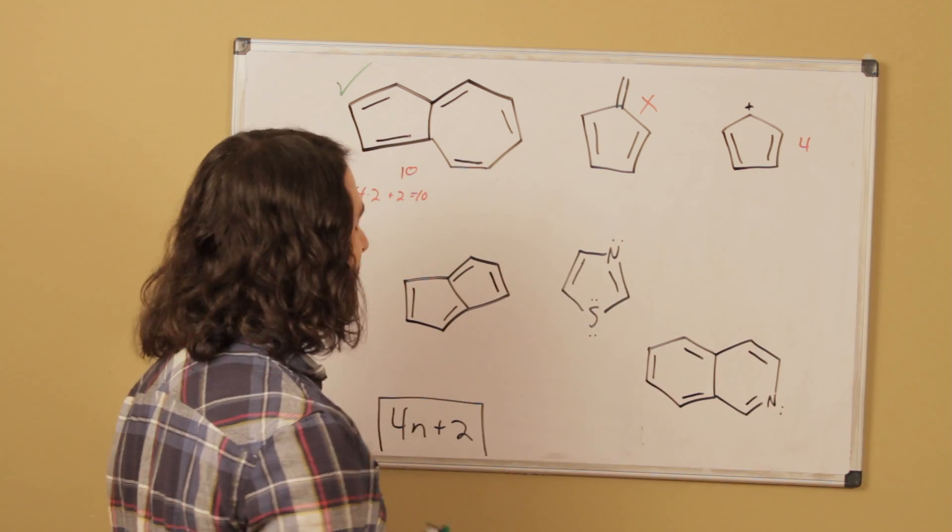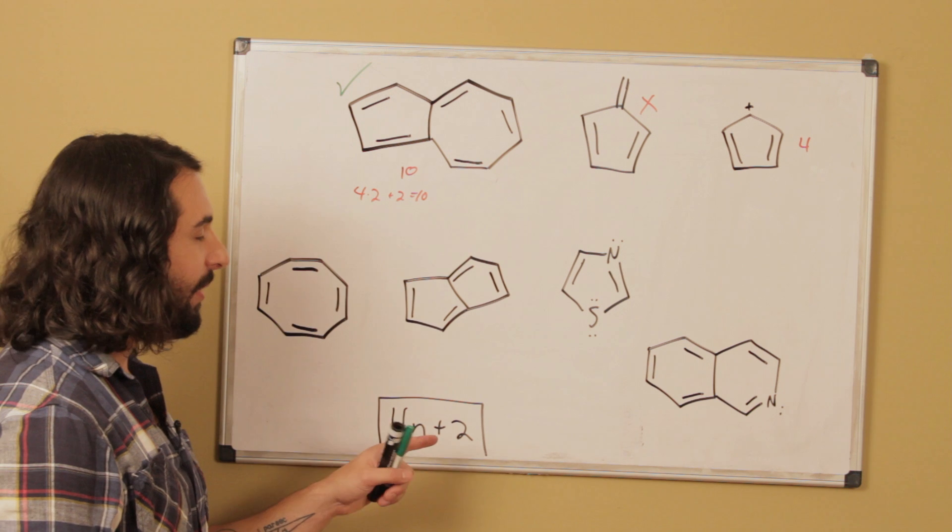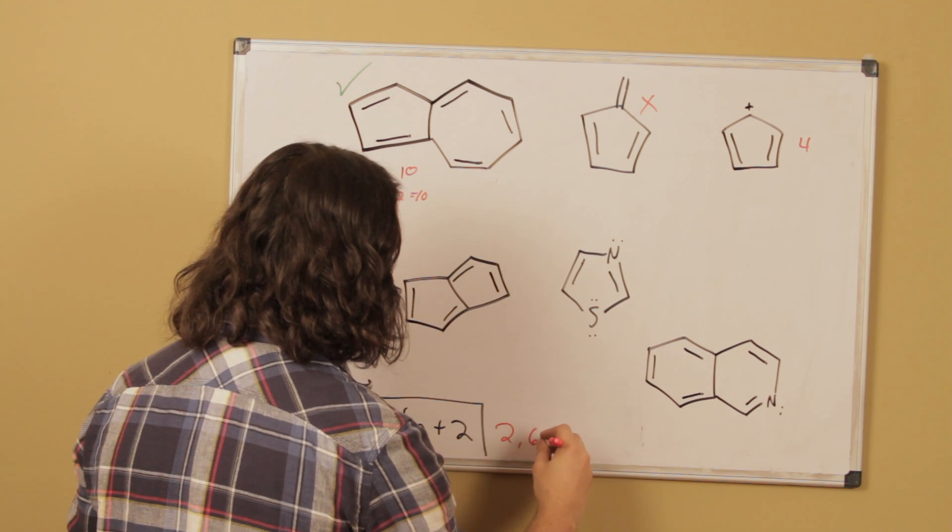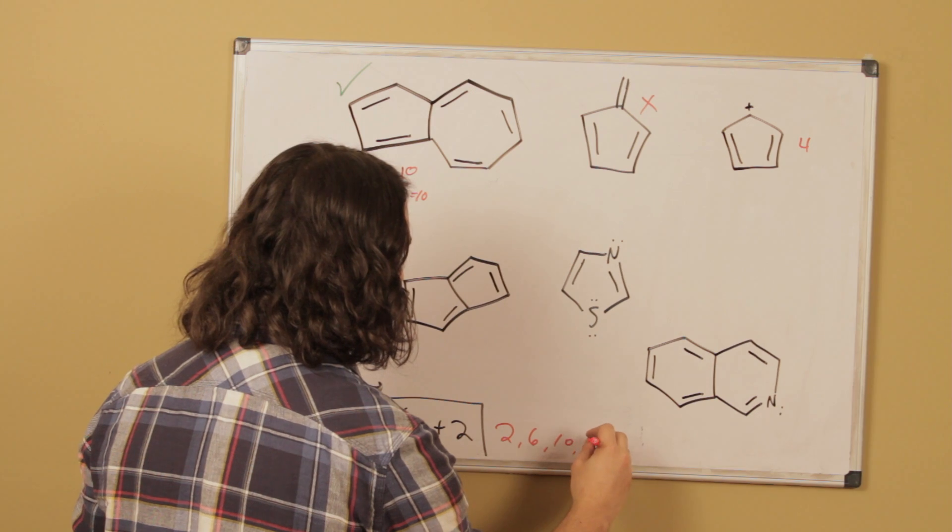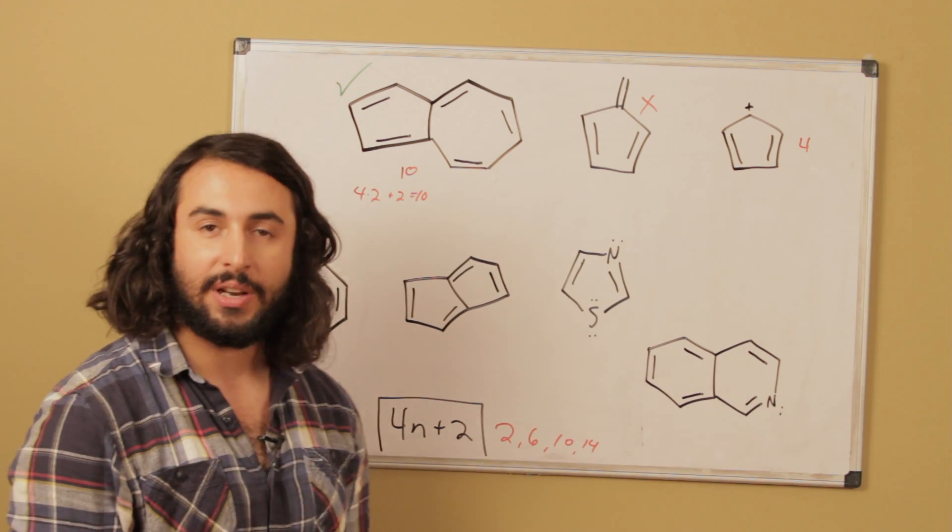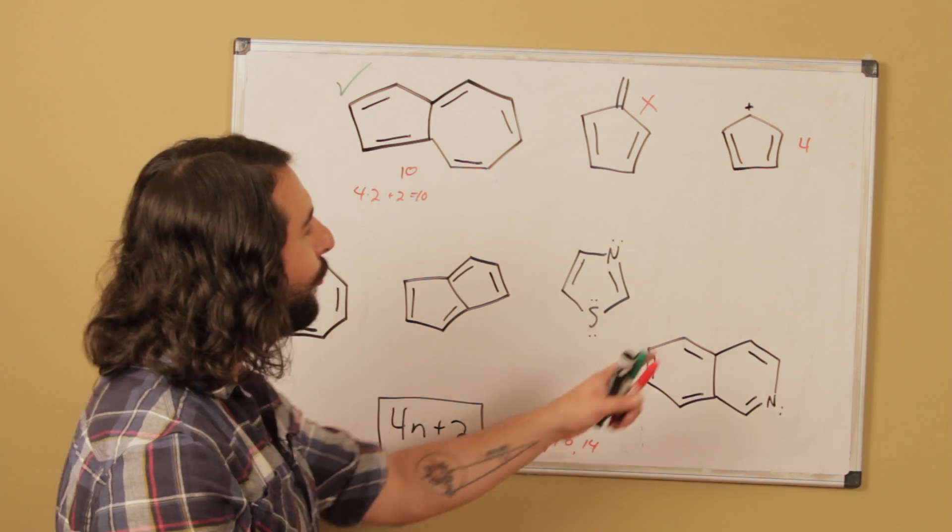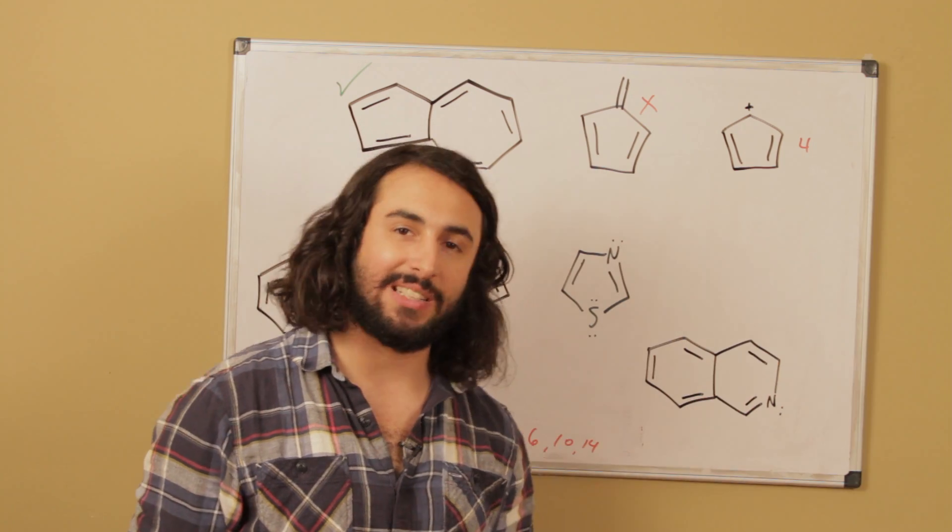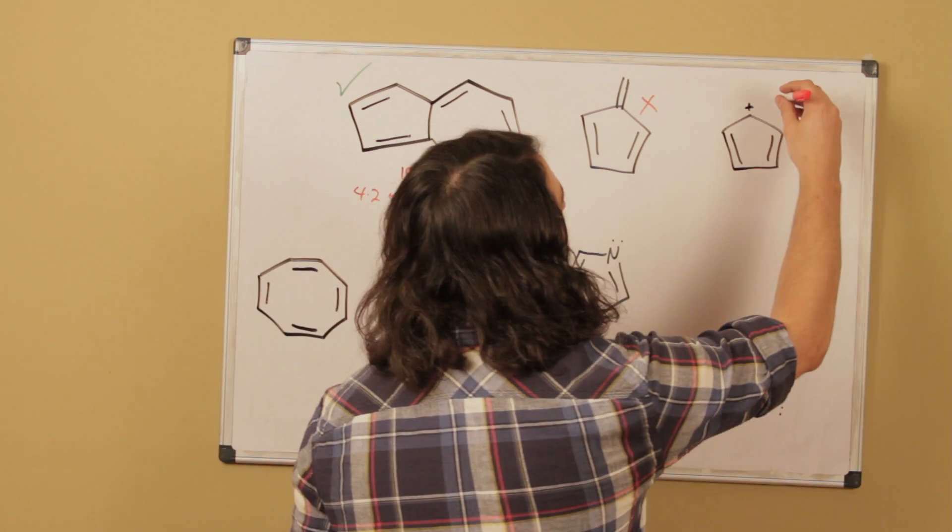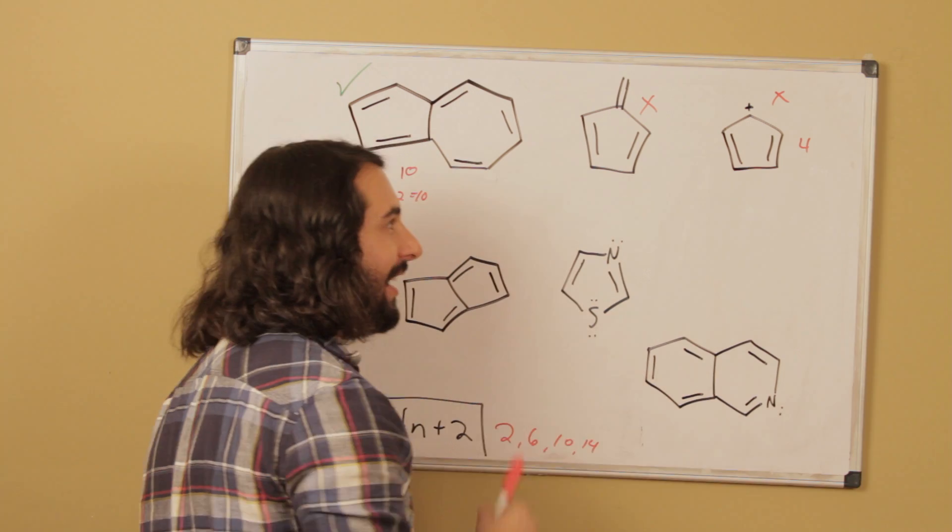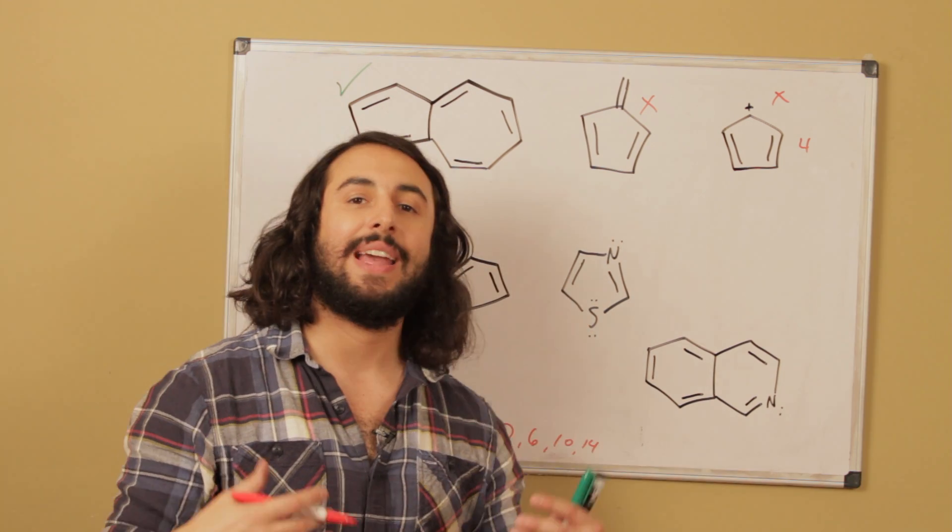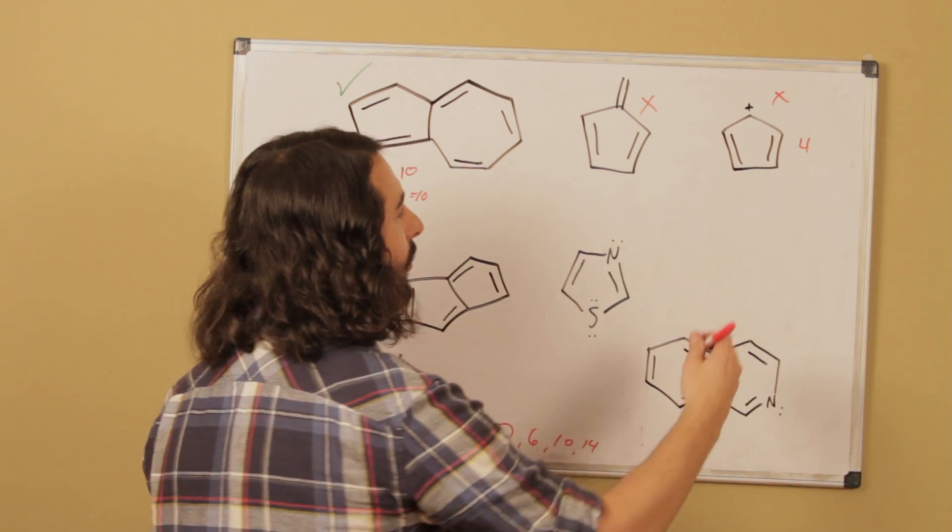However, let's look at Huckel's rule. We've got 2, 4, we've got 4 pi electrons. Okay, and 4 does not satisfy Huckel's rule because the allowed values are going to be 2, 6, 10, 14, etc. We add multiples of 4 like that. So the fact that we have 4 pi electrons, that does not satisfy Huckel's rule. So even though it's fully planar and fully conjugated, it's not going to be aromatic. It's actually going to be anti-aromatic. Let's even write that down.